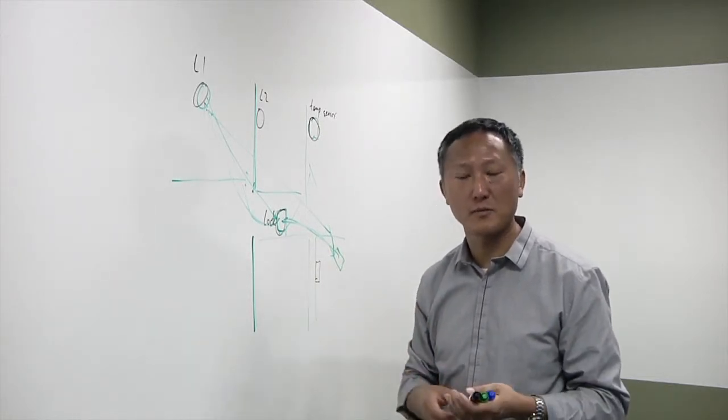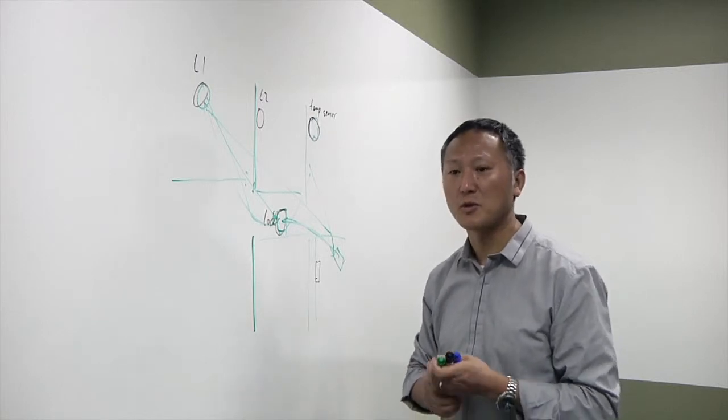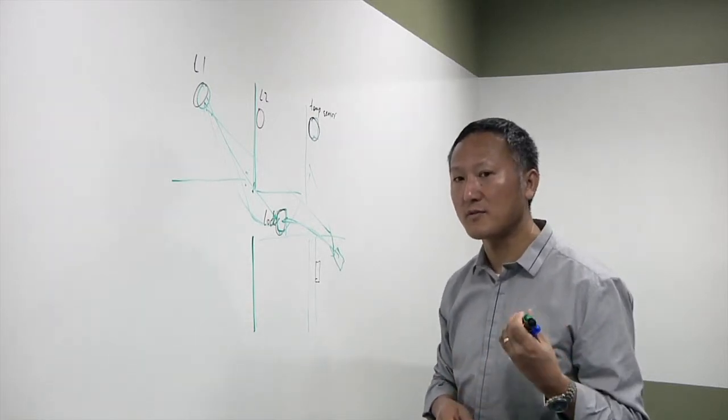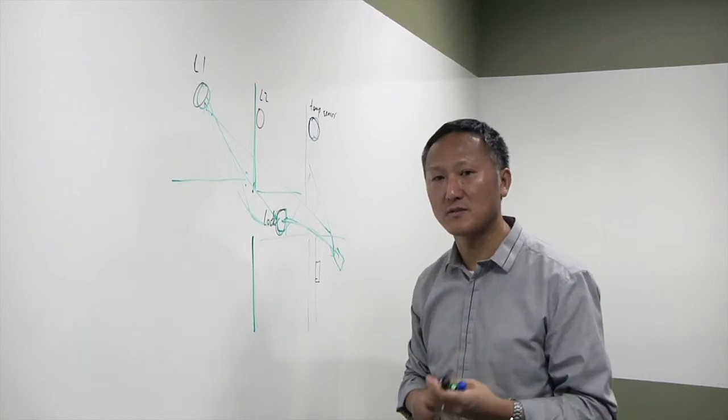And also when those devices pick up the signal, they will broadcast simultaneously, which generates a collision. So you will not have reliable communication in the channel. In other words, you don't have a guaranteed message delivery system.